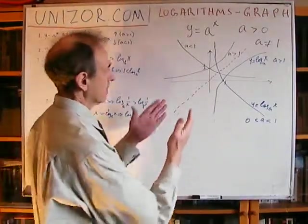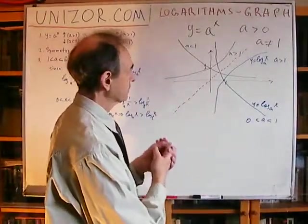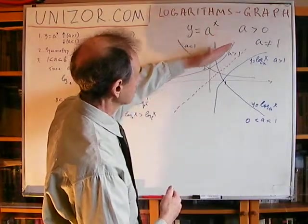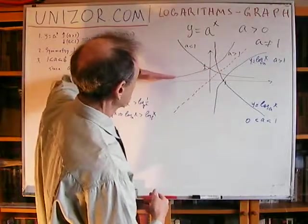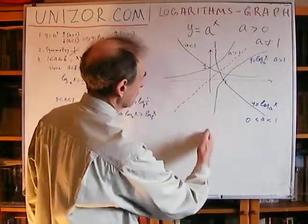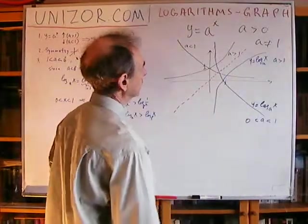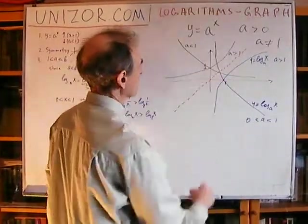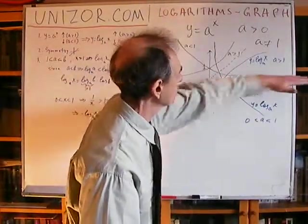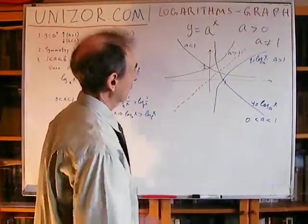These are the graphs of the logarithmic function. Inasmuch as the exponential function asymptotically approaches the x-axis, the logarithmic function will asymptotically approach the vertical y-axis here, with a greater than one. With a less than one, it's the other way around — same as the exponential function asymptotically approaching the x-axis.